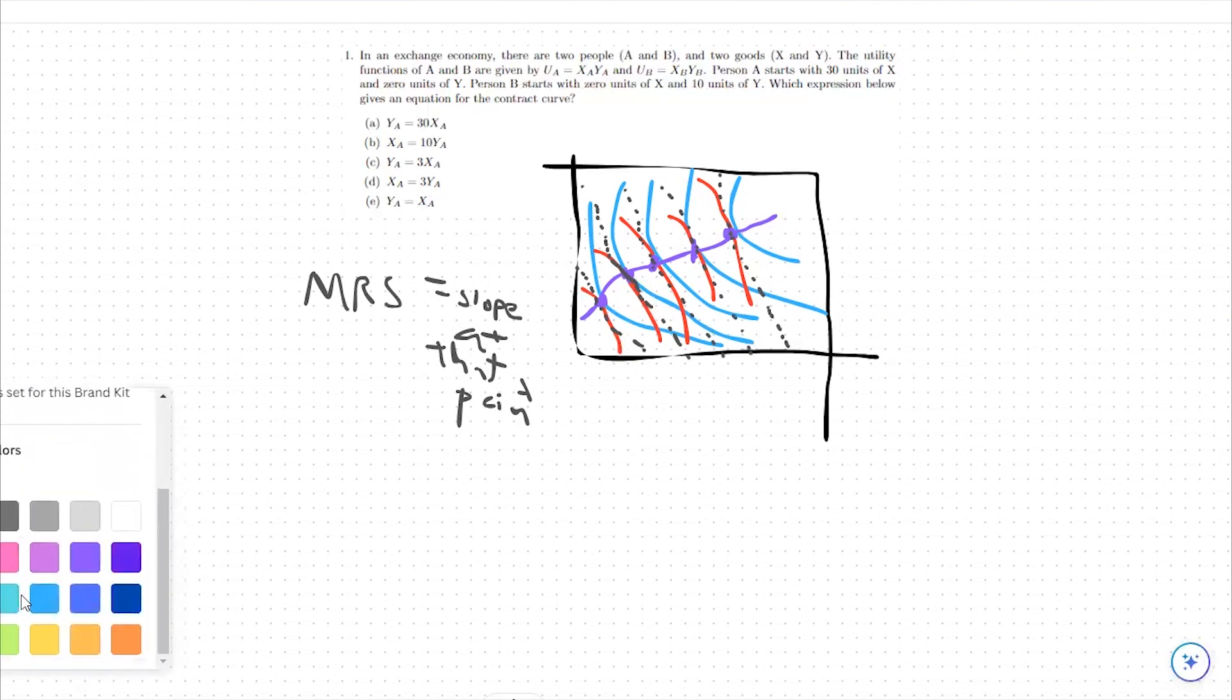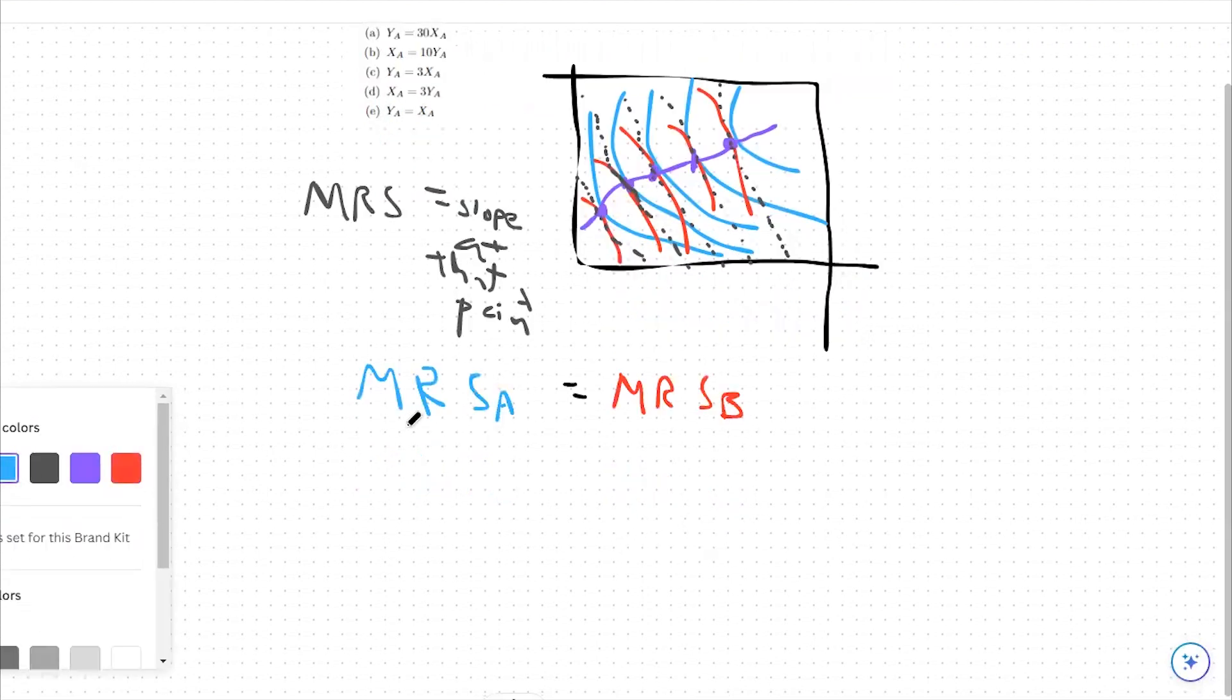So from there, what I'm going to do is say, I know the slopes are the same. I also know that if I take this and say MRSA, that's going to be equal to MRSB. If these two slopes are the same at this point, then this also holds: MRSA is equal to MRSB. So from there, I'm going to start with my MRSA and figure out what is MRSA.